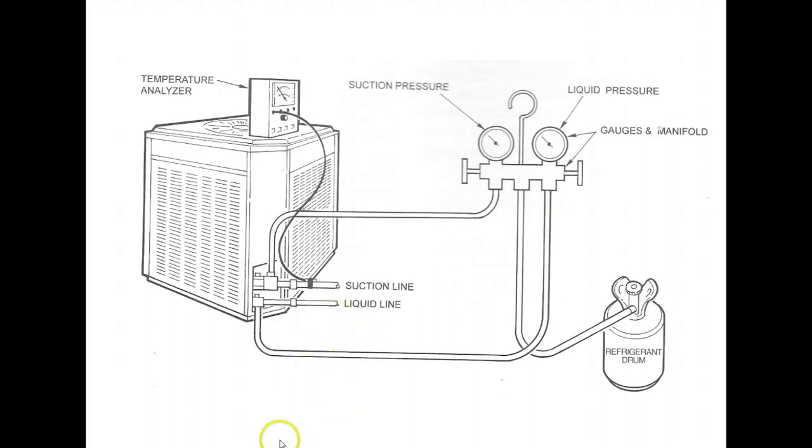The other part of hooking up the system is you're going to want to make sure that you have your temperature analyzer or your temperature gauge set up. And you're going to have it set up so that you have the sensing bulb and the temperature probe mounted about six inches away from the condensing unit on the suction line. And that is if you're measuring superheat.